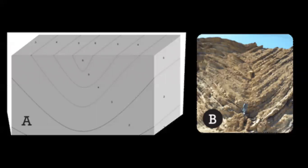A syncline is a fold that bends downward. In a syncline, the youngest rocks are at the center and the oldest rocks are at the outside edges. When rocks bend downward in a circular structure, it's called a basin. If the rocks are eroded, the youngest rocks are at the center. Basins can be enormous, like the Michigan Basin.